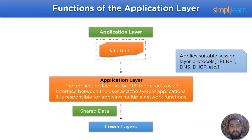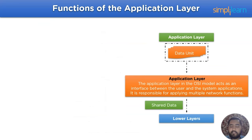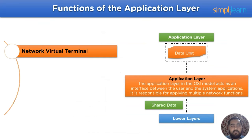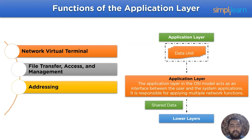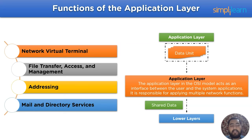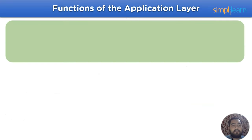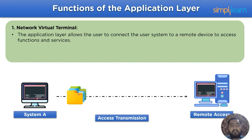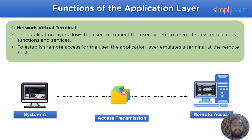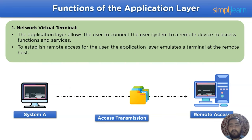The functions of the application layer include: network virtual terminal, file transfer access and management, addressing, and mail and directory services. For network virtual terminal, the application layer allows the user to connect their system to a remote device to access functions and services. To establish remote access, the application layer simulates a terminal at the remote host.